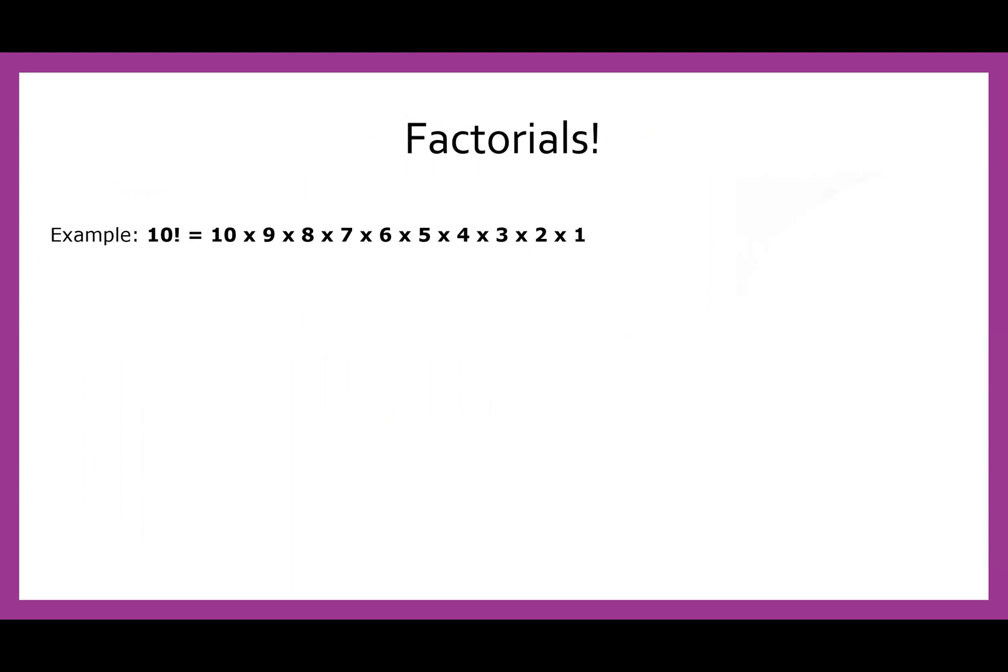Alright, factorials. So factorials is the exclamation mark, is the bang, whatever. It just says, hey, whatever number you have, multiply everything that can be for it. So 10 factorial is 10 times nine, times eight, times seven, times six, times five, times four, times three, times two, times one. So everything that can be for 10, all the whole numbers, multiply them together.